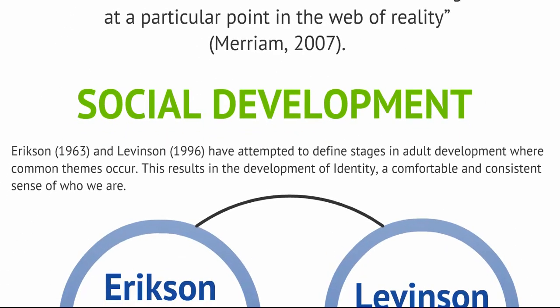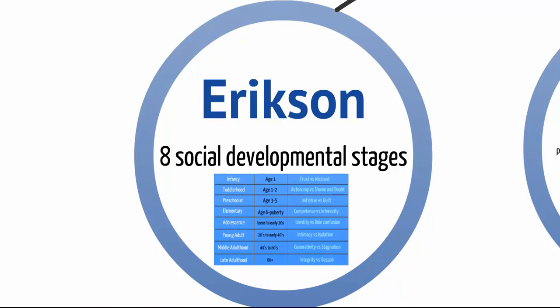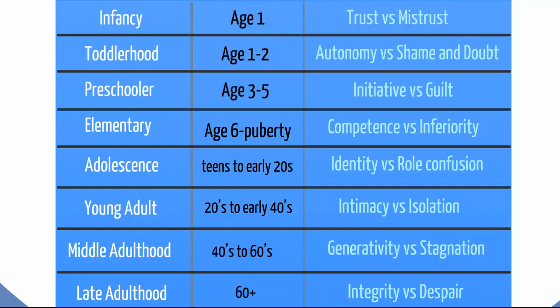Erickson and Levinson also attempted to define stages of adult development where some common themes occur, resulting in the development of our identity — a comfortable and consistent sense of who we are. Erickson suggested eight social developmental stages, each with its own psychosocial task to resolve: trust versus mistrust in infancy; autonomy versus doubt in toddlerhood; initiative versus guilt in the preschool years; and competence versus inferiority in elementary school. The four stages relating to adult learning begin with adolescence to early twenties — identity versus role confusion; young adulthood up to early forties — isolation versus intimacy; middle adulthood — stagnation or generativity; and late adulthood — integrity versus despair.